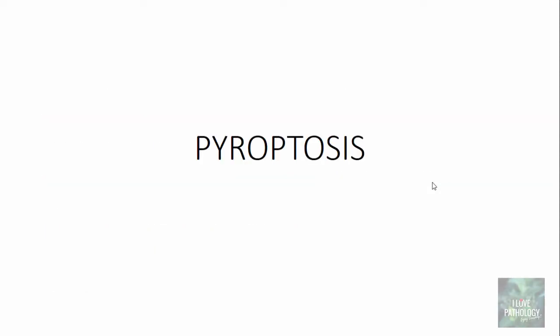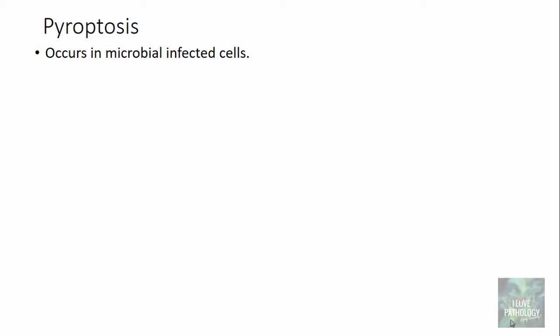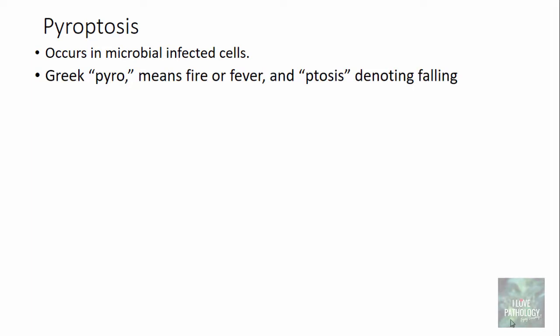The last part of today's tutorial is pyroptosis. Pyroptosis occurs in microbial infected cells. The name is derived from the Greek words where 'pyro' means fire or fever and 'ptosis' means falling. Since this type of cell death involves the release of inflammatory mediators causing fever, it is referred to as pro-inflammatory programmed cell death.